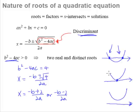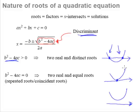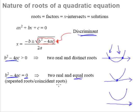When your quadratic equation only intersects the x-axis at one point, the x-axis is tangent to the curve. This happens when the discriminant is equal to zero. We call these repeated roots. There are still two roots here, but they are the same value, so we call them two real and equal roots, or sometimes coincident roots.